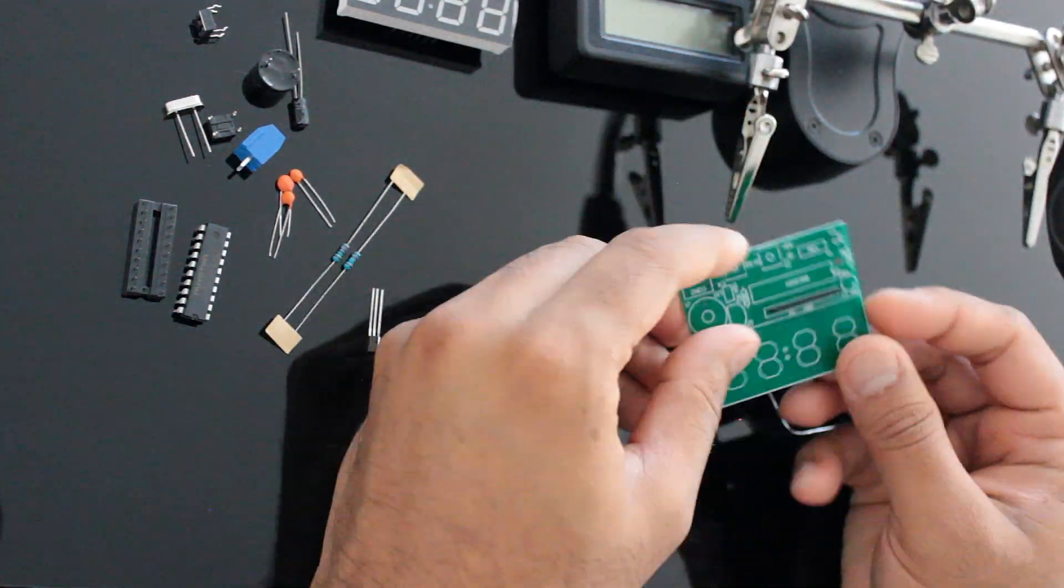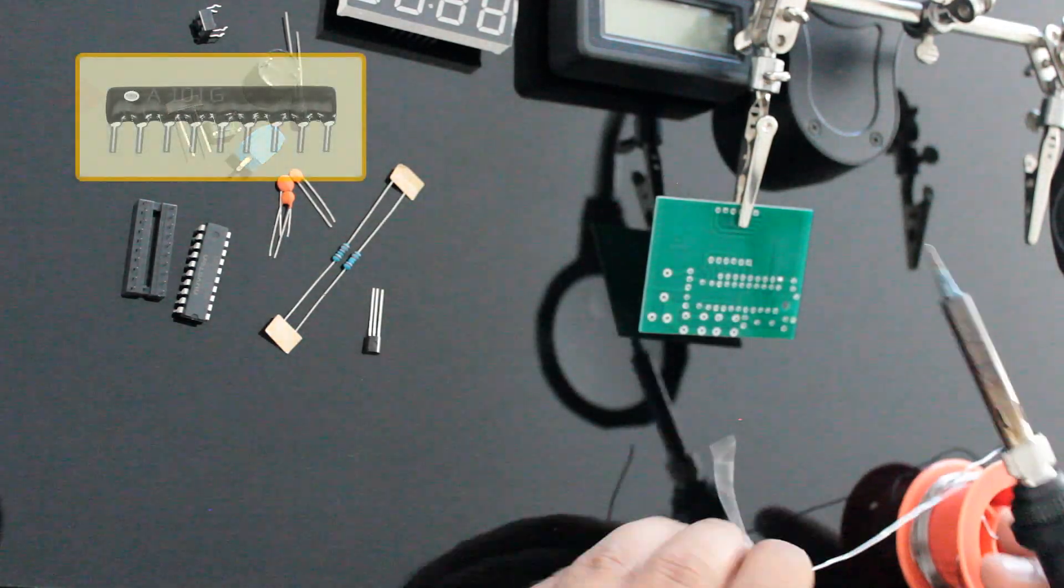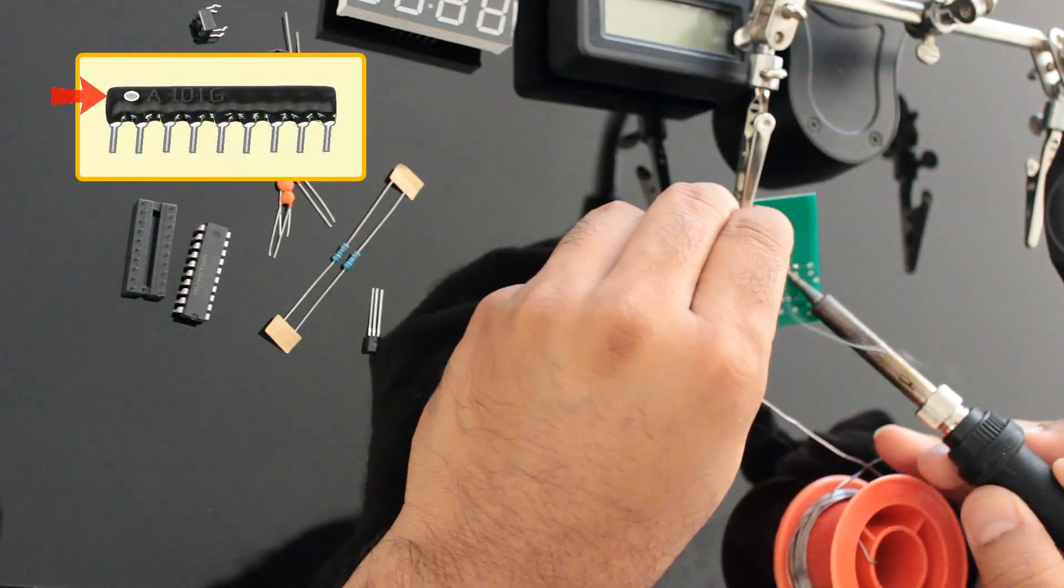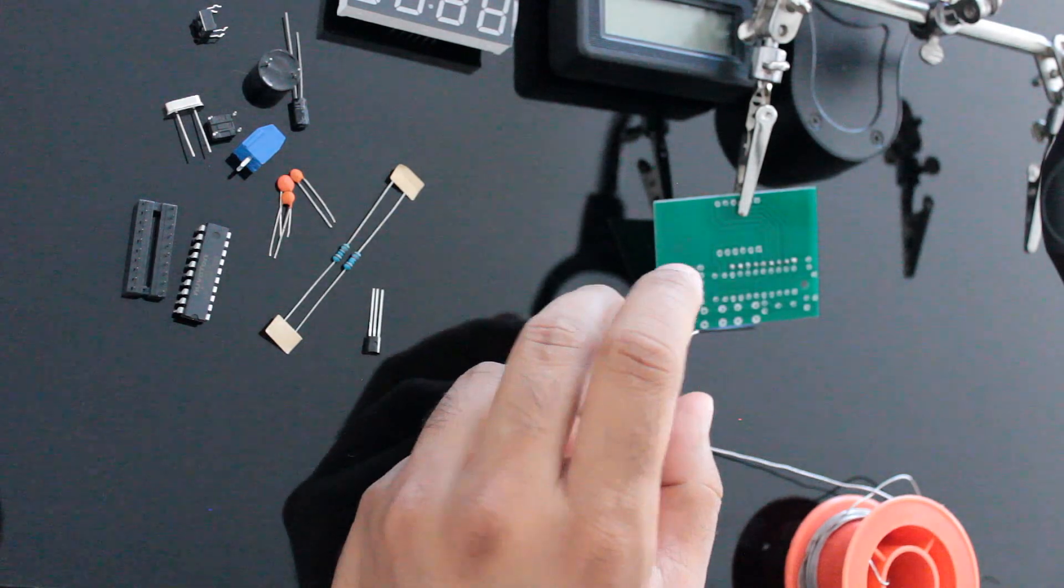Let's first solder the 1K PR1 resistor pack to the board. One end of the resistor pack has a white dot on it. The white dotted side sits on the square facing the left side of the clock.